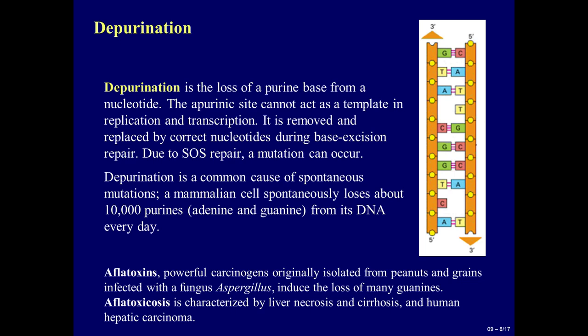Depurination is a loss of a purine base from a nucleotide. The apurinic site cannot act as a template in replication and transcription. It is removed and replaced by correct nucleotides during base excision repair. Due to SOS repair, a mutation can occur. Depurination is a common cause of spontaneous mutations. A mammalian cell spontaneously loses about 10,000 purines — adenine and guanine — from its DNA every day.